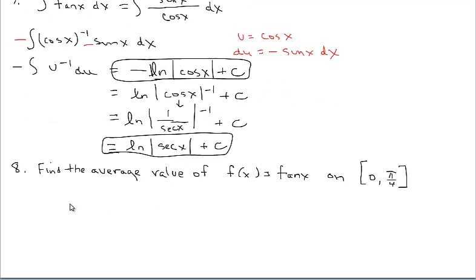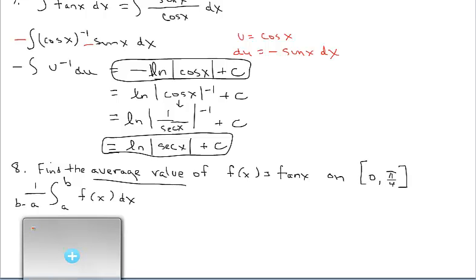For the last example, we're finding the average value of f(x) = tan x on [0, π/4]. Revisiting this topic: what does the formula look like? It's 1/(b-a) times the integral from a to b of the function. When you see 'average value,' write down the formula and customize it to what we need.